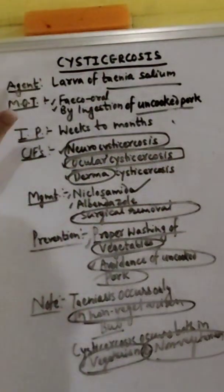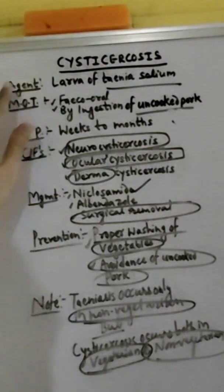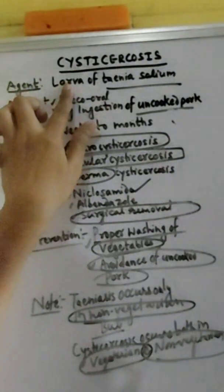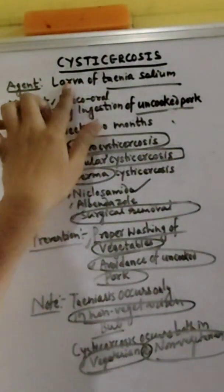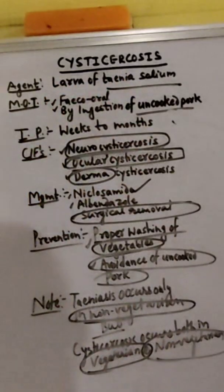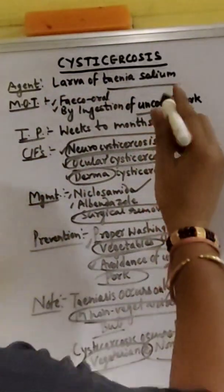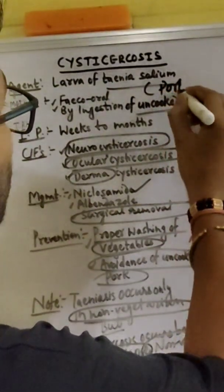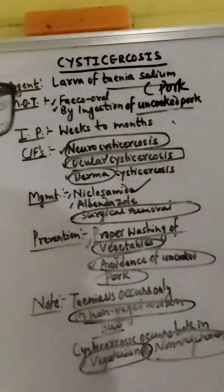Namaste everyone. Today we are going to discuss about cysticercosis. So what is the causative agent of cysticercosis? The larva of Taenia solium — Taenia solium stands for pork tapeworm.